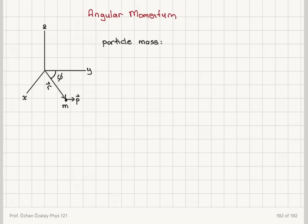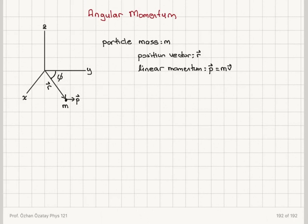The particle has mass m, position vector r, and linear momentum p. Linear momentum means mass times the velocity of the particle, where velocity is dr/dt — the instantaneous velocity. Therefore p = m·dr/dt is the instantaneous linear momentum of the particle.